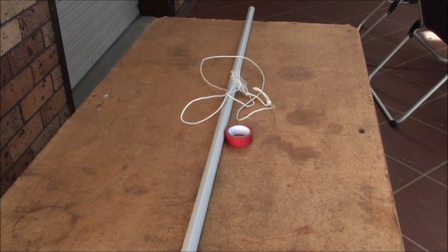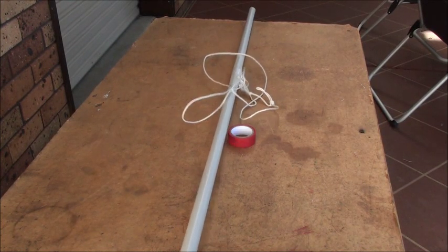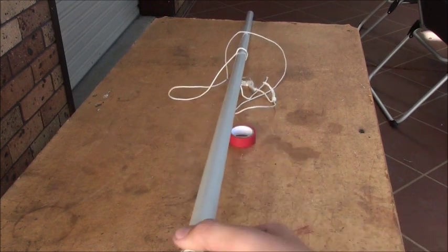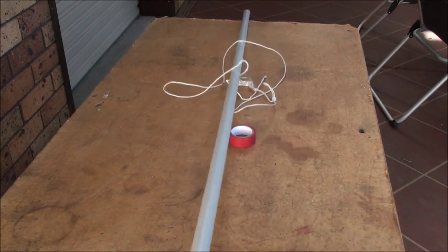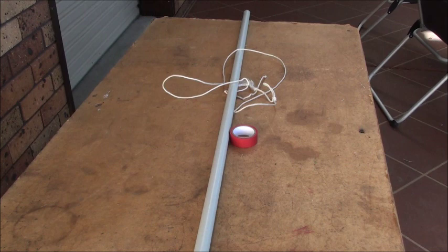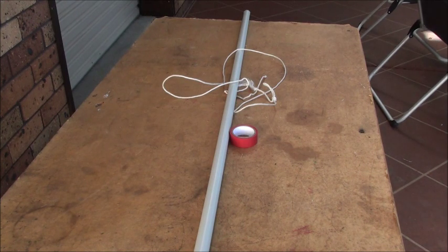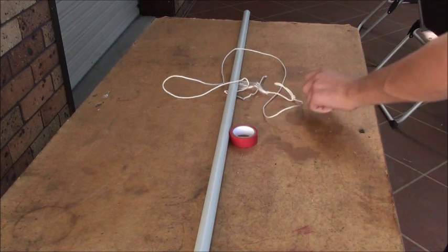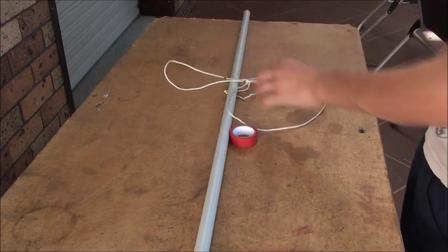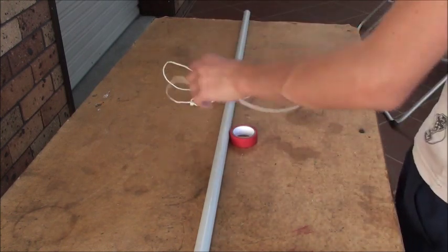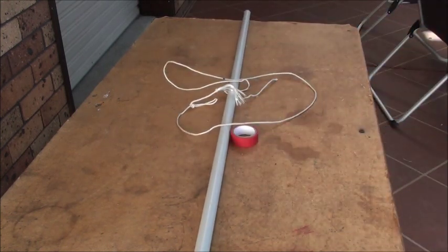What you're going to need for this bow is a piece of PVC. If you want the bow to be more powerful, you can use thicker and shorter PVC. But I've got quite a long, thin piece, so it'll be quite easy to pull back. This would be for kids from about 8 to 12. You need some string and some tape, and that's all you'll need for this bow.